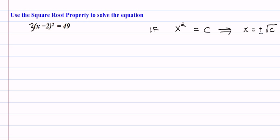If we had a 3 out in front of this, we'd have to get rid of that 3, because the 3 is not being squared. Everything on this side has to be part of the exponent, or it's got to be the base of that exponent.